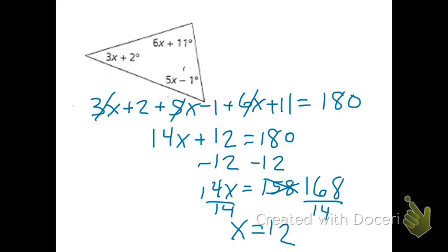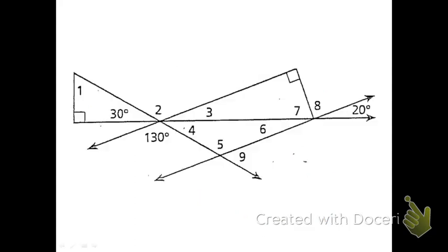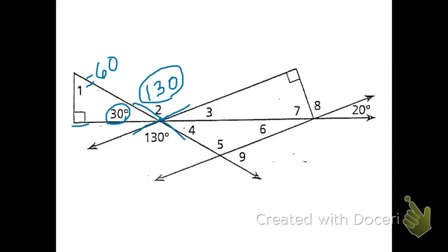Let's look at one more example. We're going to look for triangles and given angles to help us find missing angles, and also look for linear pairs and vertical angles. Angle 1 is 60 degrees because 90 plus 30 subtracted from 180 gives 60. Angle 2 is 130 because these are vertical angles — angle 2 and 130. Angle 3 is 20 degrees because 30 plus 130 add up to 160, and 180 minus 160 gives 20.